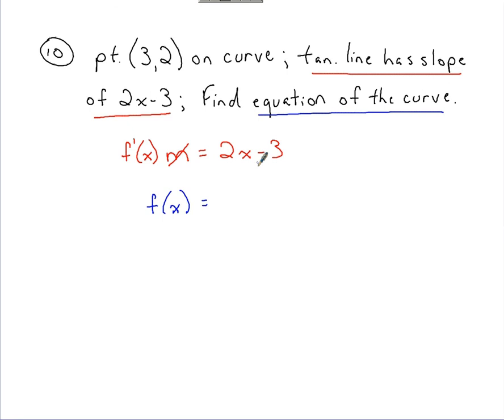So working through term by term, you've got x to the first here. Add 1, got x to the second. Reciprocal of 2 is 1 half. 1 half gets multiplied to the 2 in front. That would just be 1, so x squared is your antiderivative for that term. Got your constant of minus 3, so that's where we attach an x. And then we've taken the antiderivative, so we tack on c.